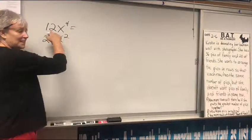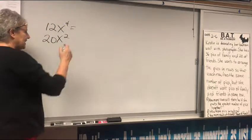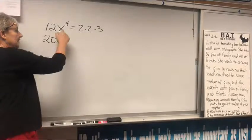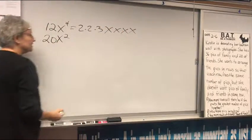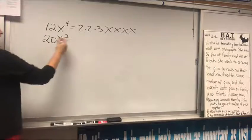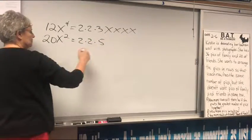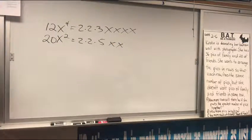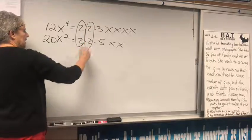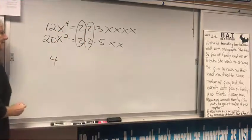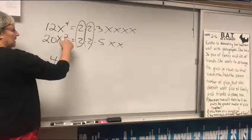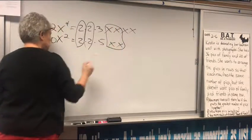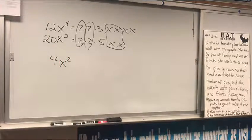I'm going to do the prime factorization of 12. Just imagine me doing a tree and taking the time. I would get 2 times 2 times 3, and then X is X, X, X, X. 20 would be 2 times 2 times 5, X, X. Now this is how you get the answer. The ones they have in common. In other words, 4 is the biggest number they both have. The biggest amount of X's they both have is 2 of them. That's the greatest common factor.